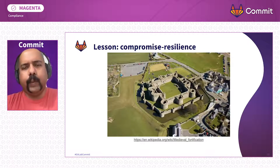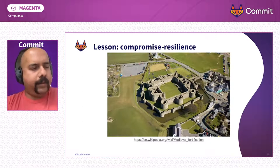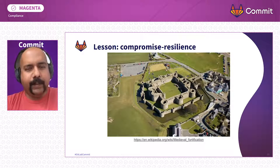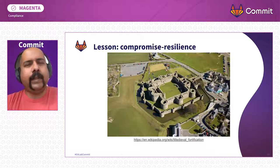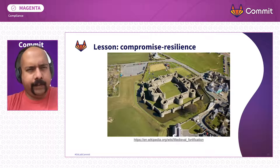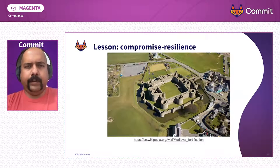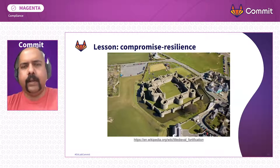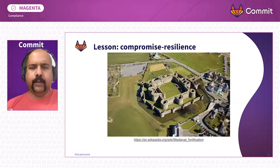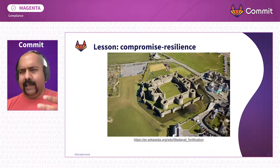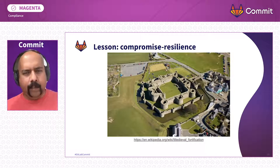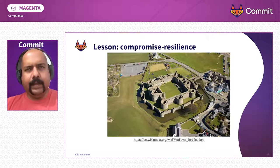The property we want is something we call compromise resilience. Imagine a medieval king told: we know people break into fortresses — but don't worry, we've built you an impenetrable fortress. As a king, you should be very suspicious — there's no such thing. You cannot prevent the compromise. What you can do is mitigate the impact of a compromise. You build defense in depth — multiple layers — so attackers look from far away and say, 'I've got better things to do with my time.' That's compromise resilience in a nutshell.